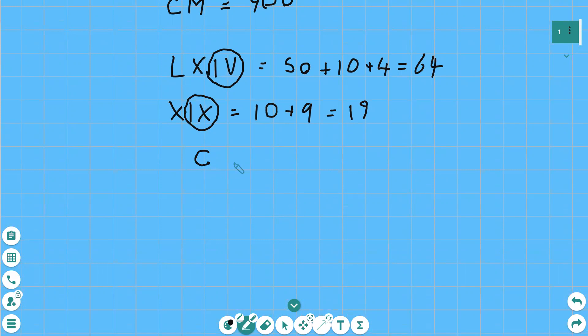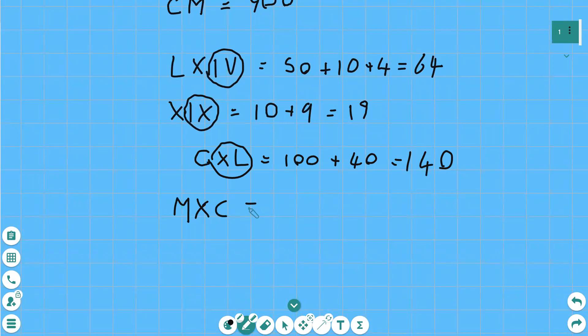Then CXL. C is 100 of course. The X is coming in before the L. X 10 is less than L 50. So that must be 1 unit and that must be 40. One hundred and 40. Or we could have MXC. M is 1,000. X is 10 is less than C 100. So that must be a unit there. That must mean 1,000 plus 90. 1,000 and 90.